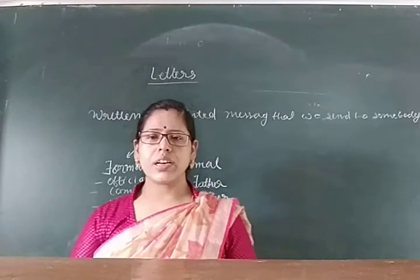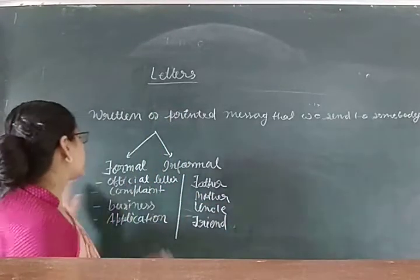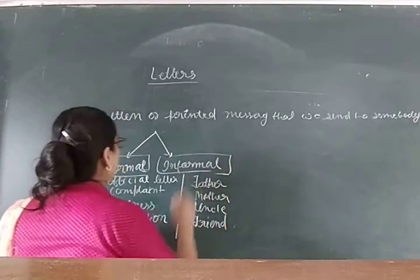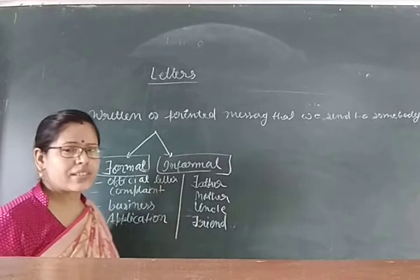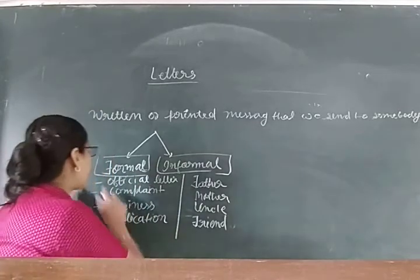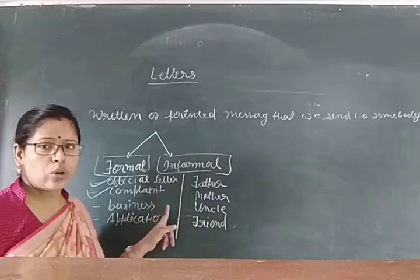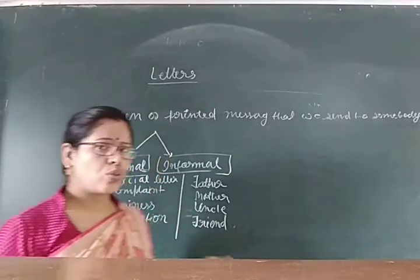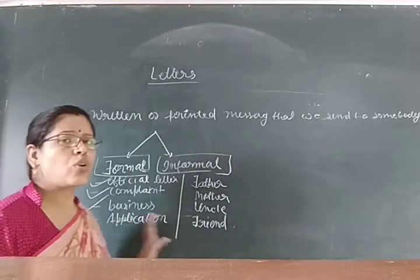In English grammar, there are two kinds of letters basically. The first one is a formal letter and the second one is an informal letter. In formal letters, there are various kinds, like official letters, complaint letters, and when we write a letter to an editor, that is also an example of a formal letter.